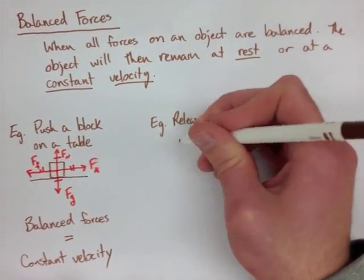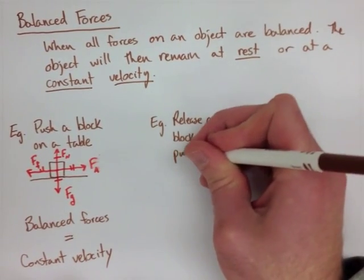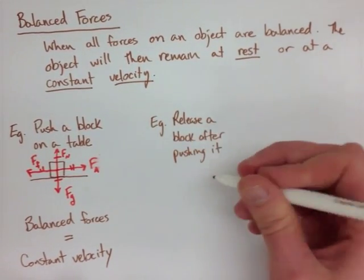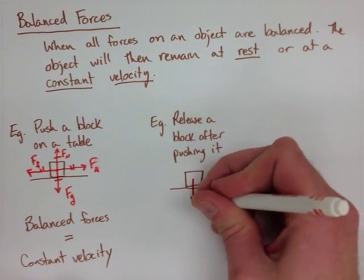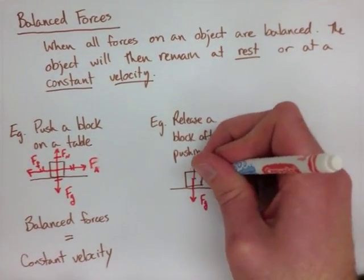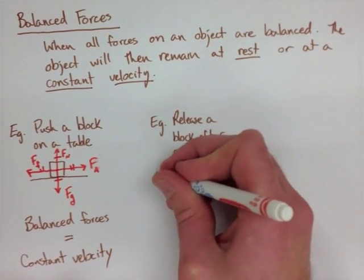In the next example, we're pushing that same block across the table, but this time we're releasing it after we've pushed it. So we put our block, we add in our force of gravity, because it's in contact with the table, we have our normal force, and those two forces balance out.